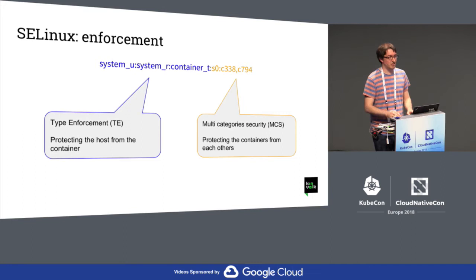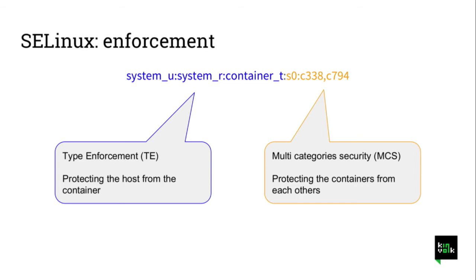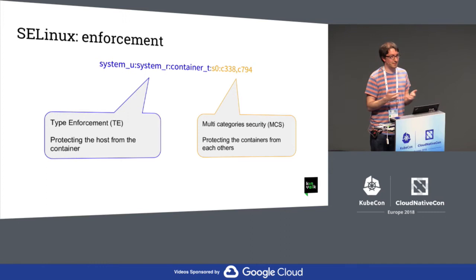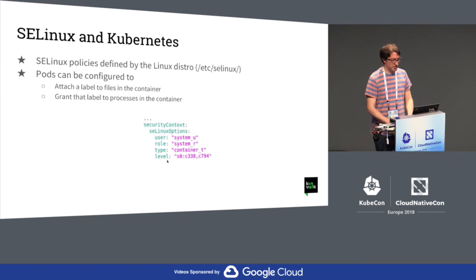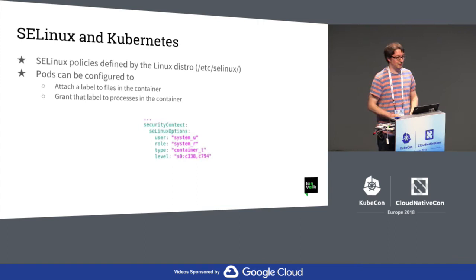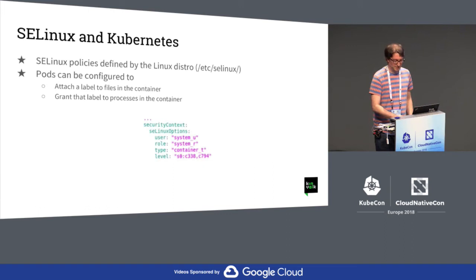That's something you can change in the configuration or your policies. In Kubernetes, in the security context, we can define some SELinux options, so we can change the labeling systems for the containers. That only makes sense together with the configuration and the policies you have on your Linux distributions. Different Linux distributions can have different policies, and you can change that. Some have SELinux enabled, some not.